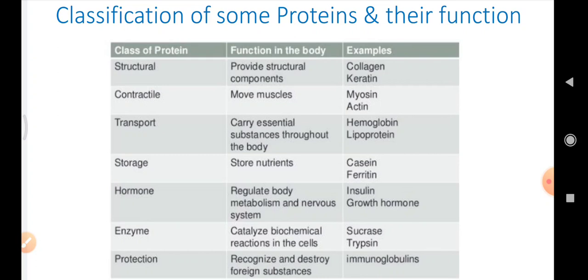Hormones are the proteins which can regulate body metabolism and the nervous system. For example, insulin and the growth hormone.